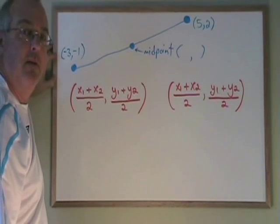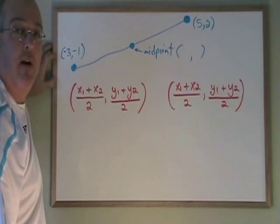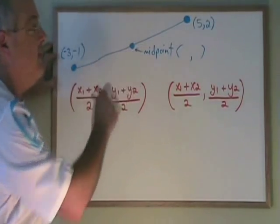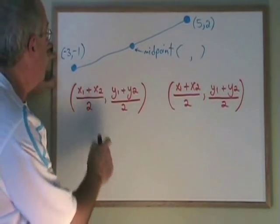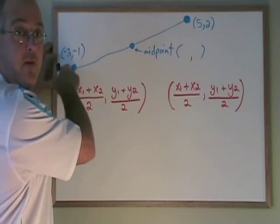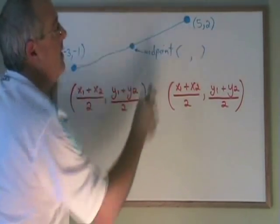The midpoint formula allows us to find the midpoint of any straight line so long as we know both of the endpoints. In this example, we have the point joined by a straight line to the point.